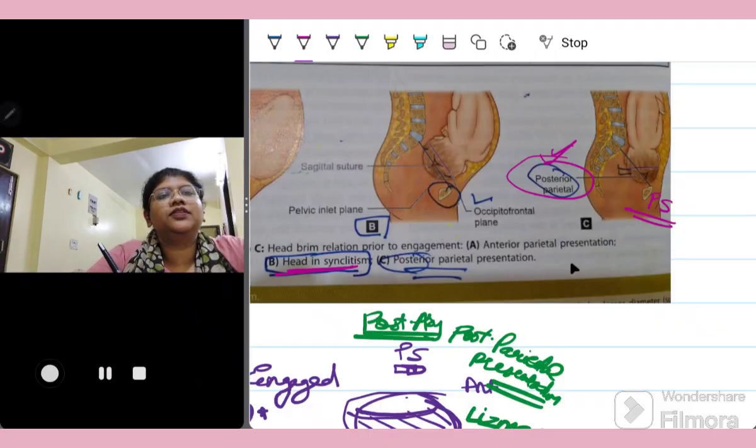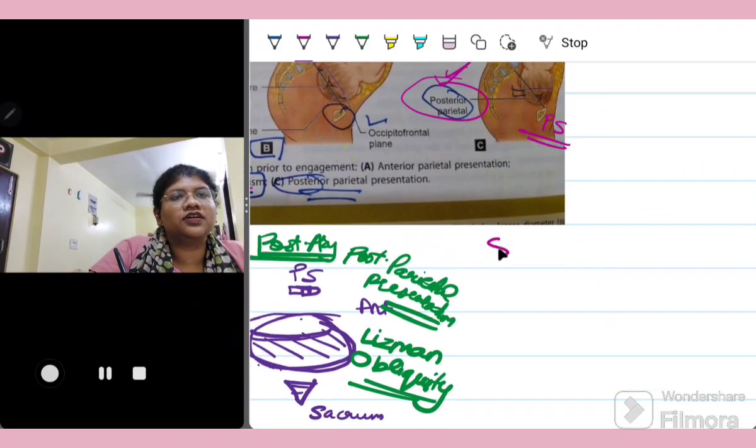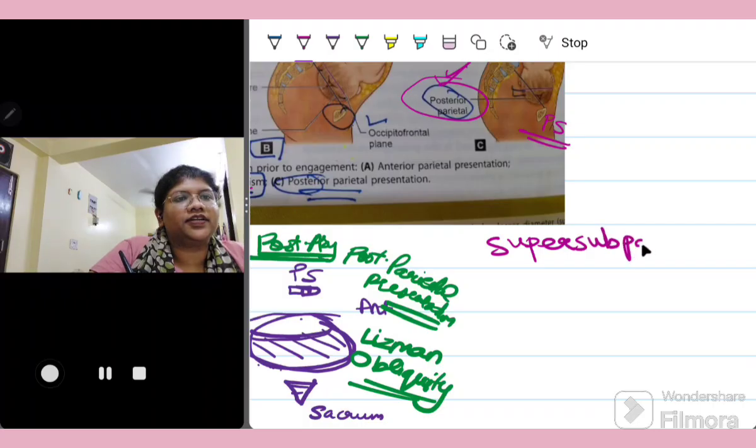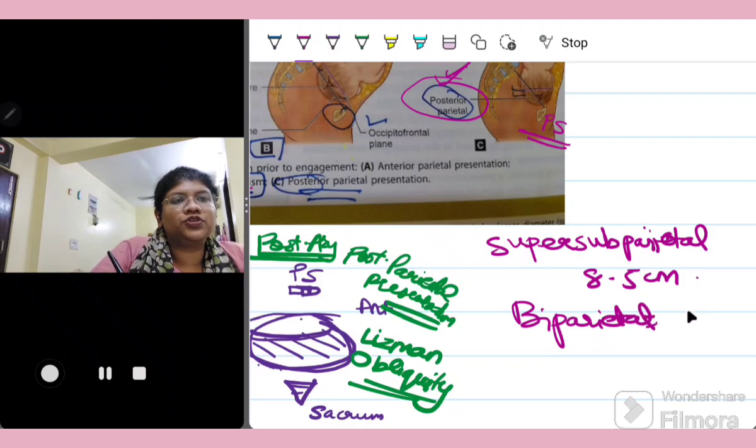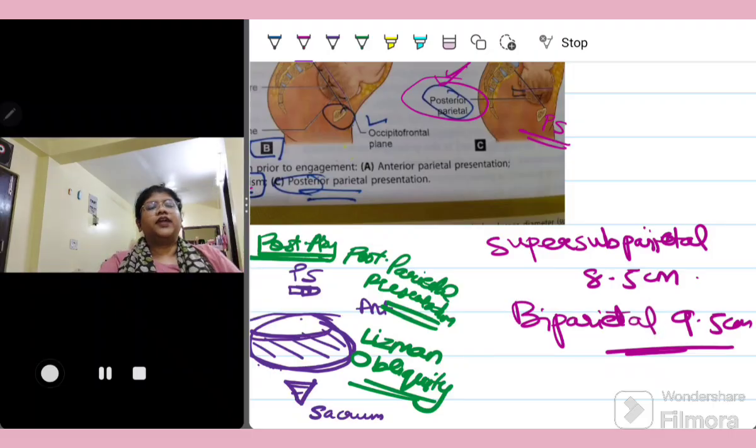So just remember the diameter that is the super subparietal. So this is the super subparietal diameter which actually should cross. This is 9.5 cm.